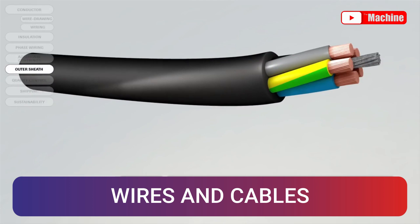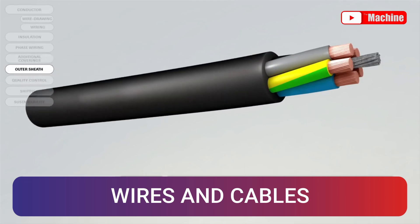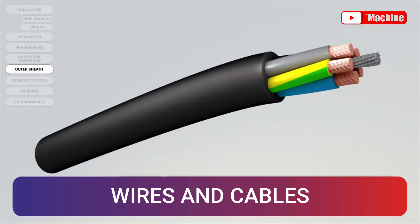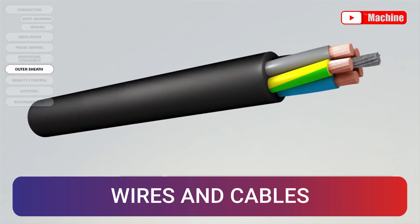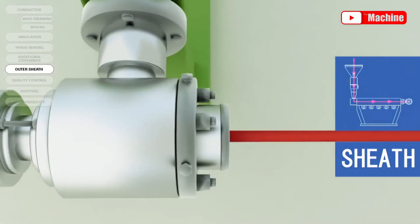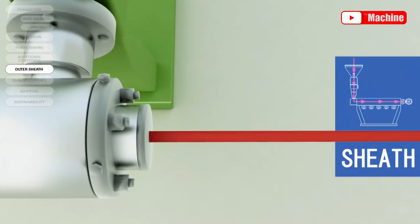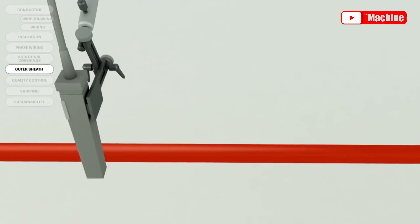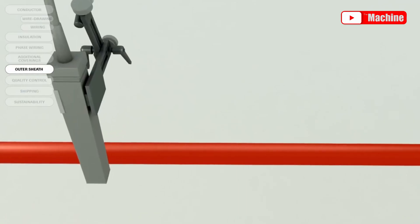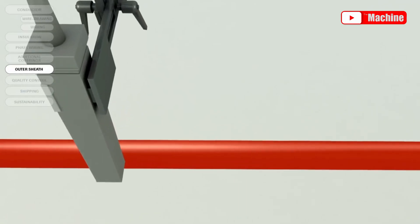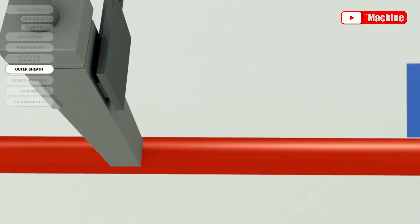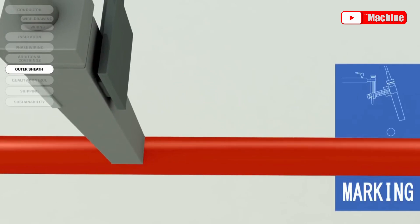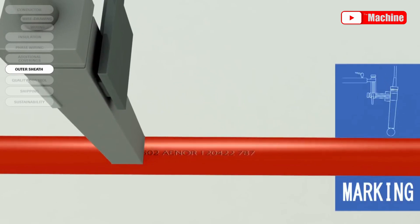On this video, we will show you some of the many varieties of wire and cables used in home construction, and explain which types to use where. This is based on Black & Decker, The Complete Guide to Wiring, 7th edition.